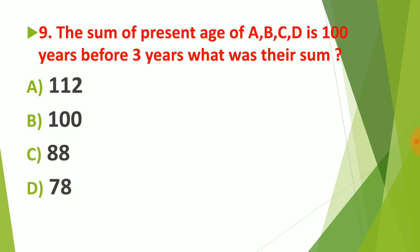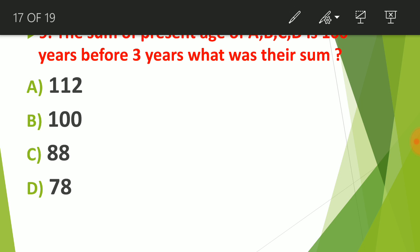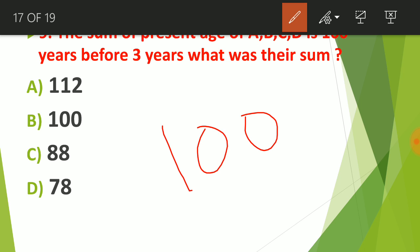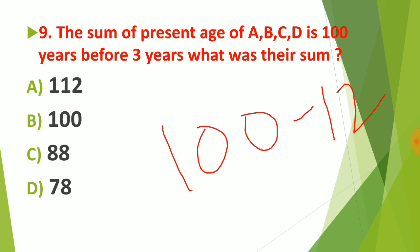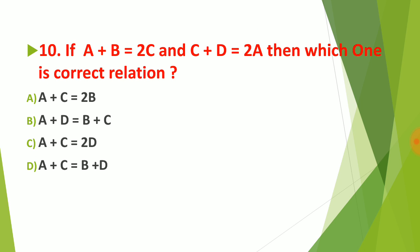Question 9: The sum of the present ages of A, B, C, and D is 100 years. Three years before, each of the four persons was 3 years younger, so we subtract 4 × 3 = 12 from 100. Therefore, the sum of their ages three years ago was 100 − 12 = 88.